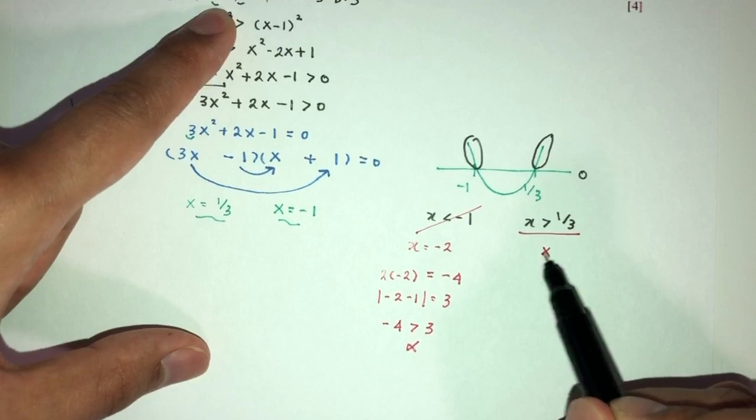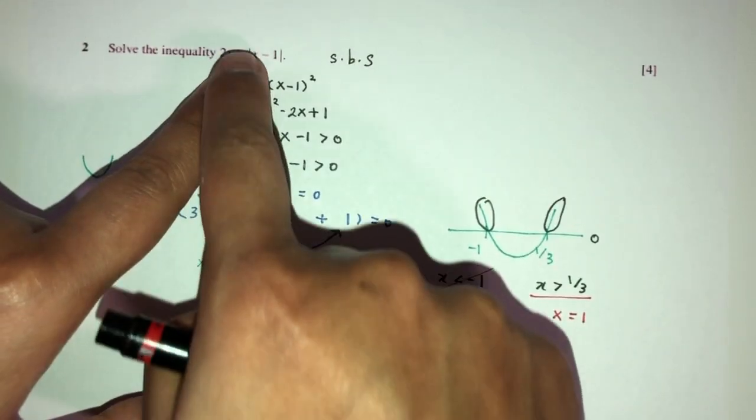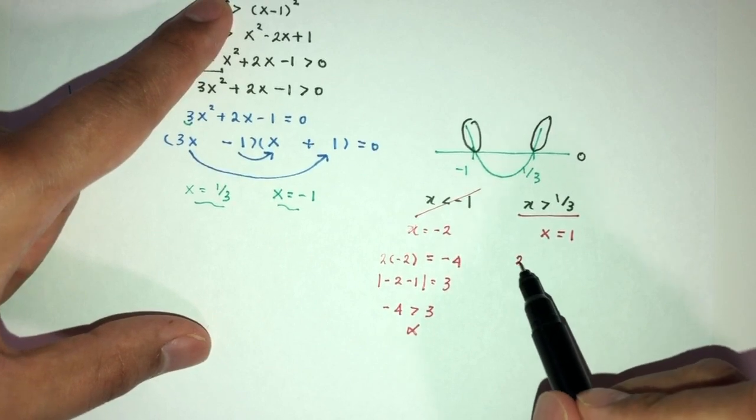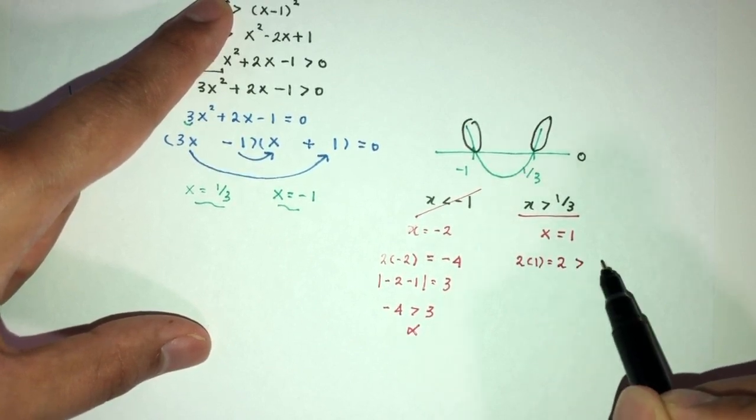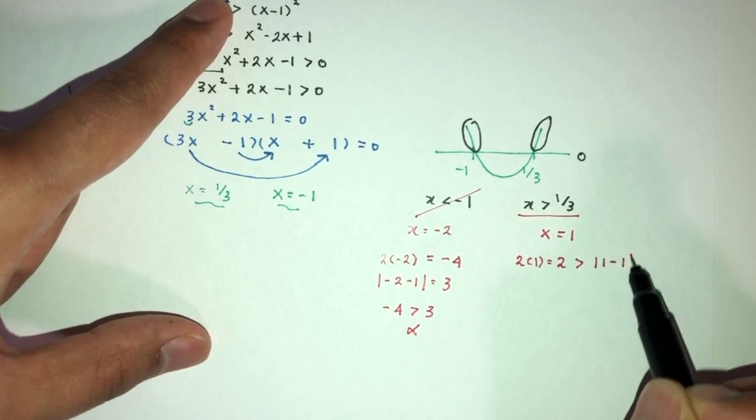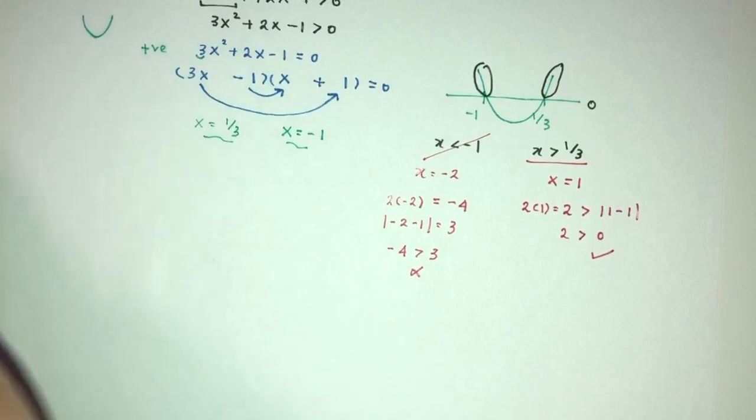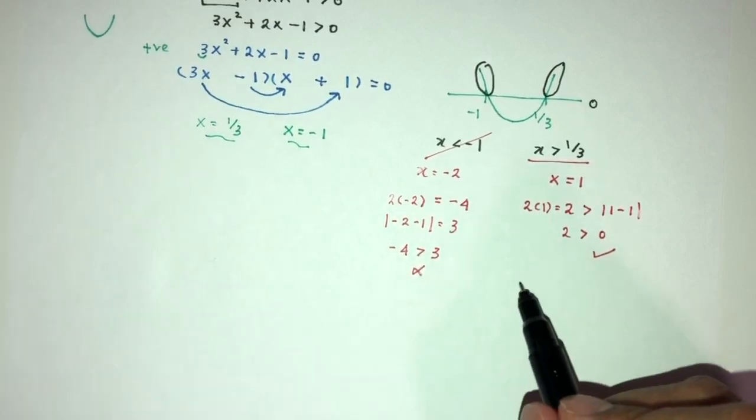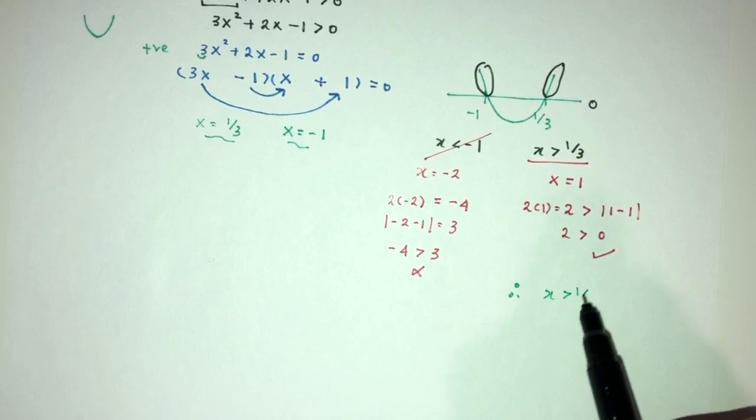How about this one? Let's take x is equal to 1. Let's check. We place back in here. The main equation, you will have 2 times 1 is 2. Is it more than 1 minus 1? 2 is indeed more than 0. So, good to go. Here in this case, by checking, we realize, we can have only one place, which is x is more than 1 over 3.